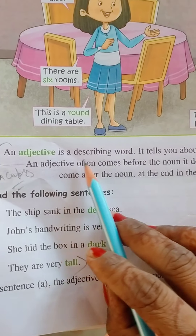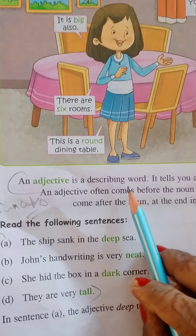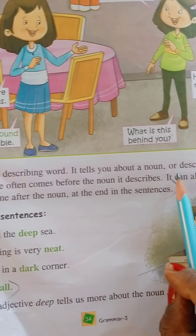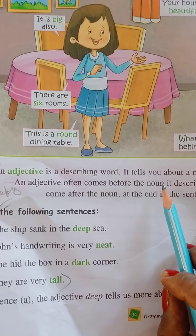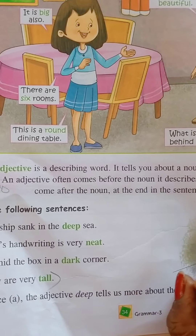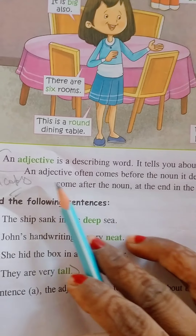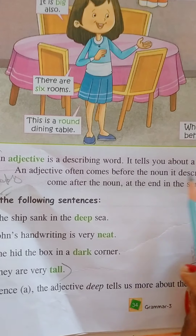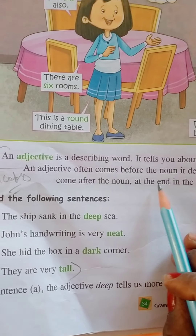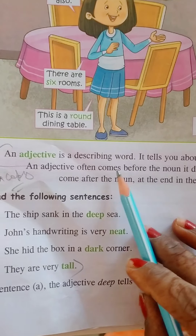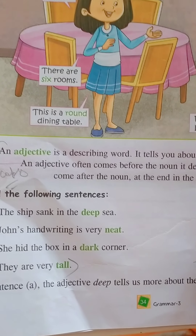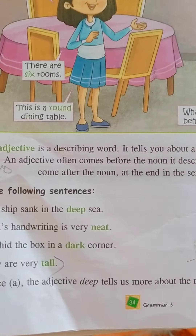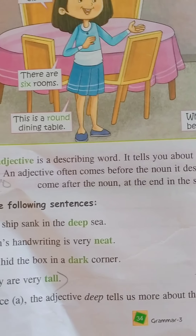Adjective jho hota hai, vishishan jho hota hai, vishishata batanye waala. It tells you about a noun or describes it. An adjective often comes before the noun it describes.